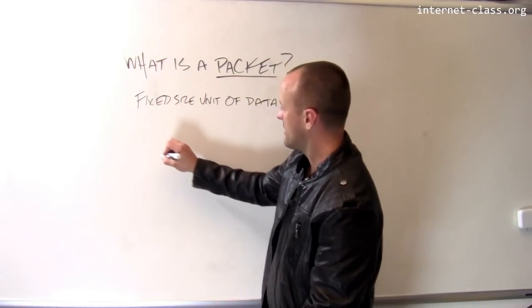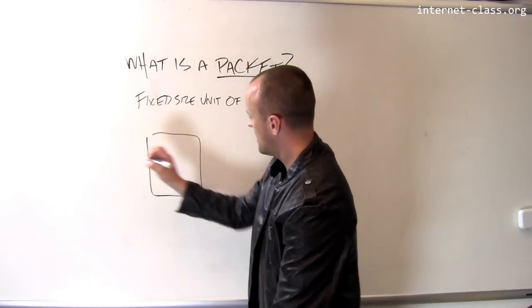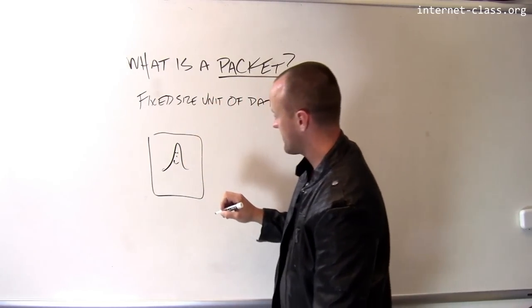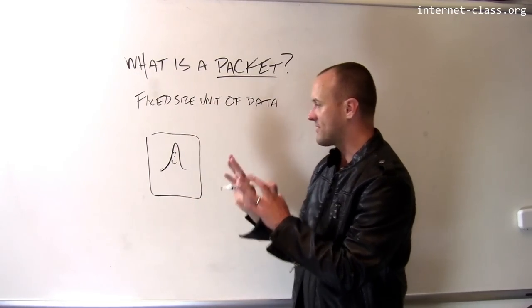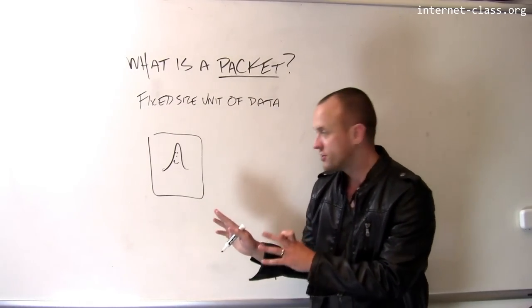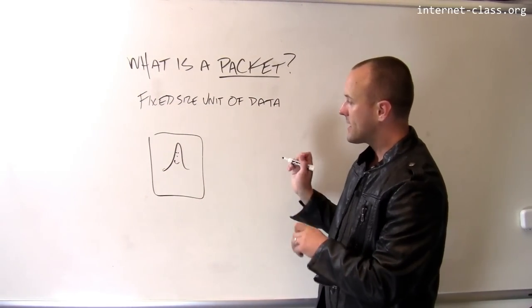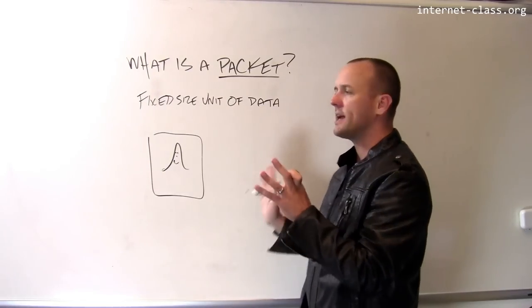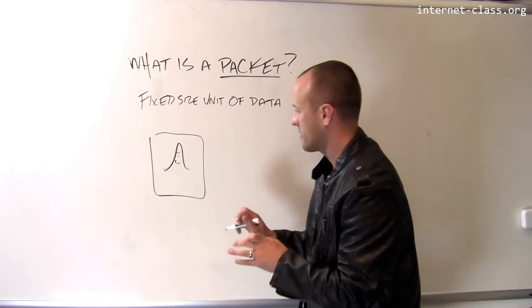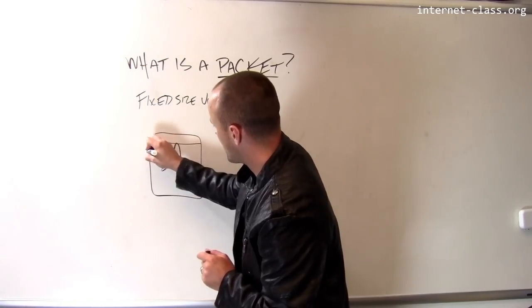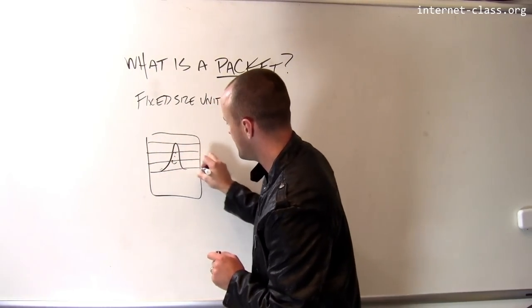So let's say I have a picture here of a friend of mine who looks a little bit ghost-like, I guess. And let's say I want to send this picture to another computer on the Internet. So what happens is my computer takes this. This is way too much data to fit inside a single packet. So what I'm going to do is I'm going to take this picture and I'm going to break it up into a bunch of different packets of information